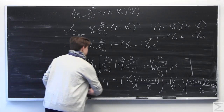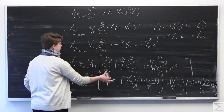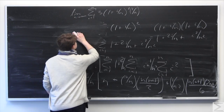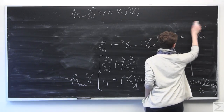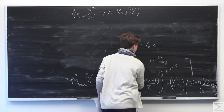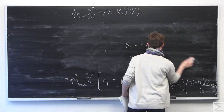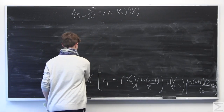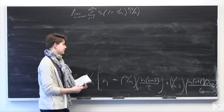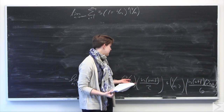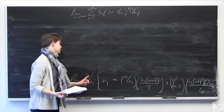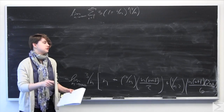Now we just have a limit as n goes to infinity of terms only involving n, so we're in good shape. To finish the problem, I'm going to simplify by canceling out and combining like terms and then take the limit. I'll do this in two steps: first distribute terms inside, then distribute the 3 over n.